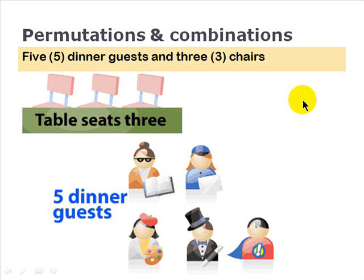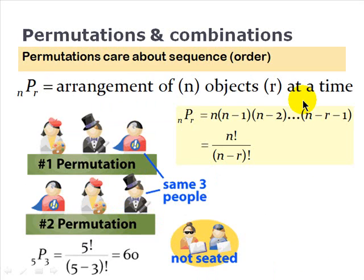So we can first ask a permutation question. And that is, how many different ways can we seat three people at the table if we do care about the sequence or order? So permutation is denoted this way with two subscripts, n and r, P for permutation. And that means it's the arrangement of n objects taken r at a time.